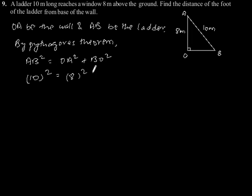This gives 100 = 64 + OB², which gives OB² = 36.